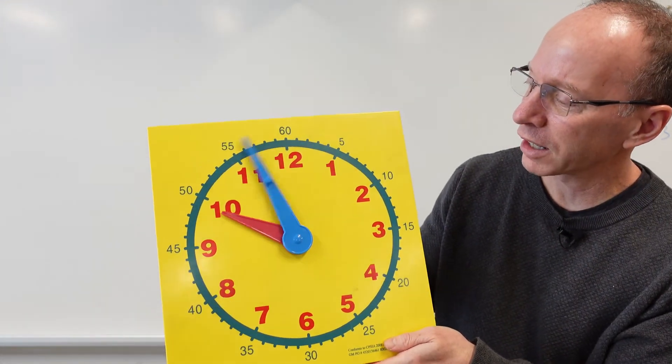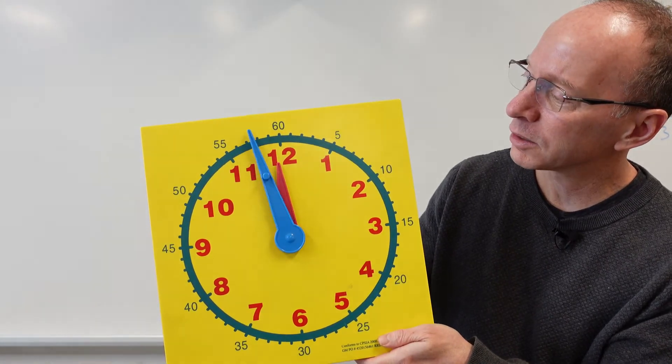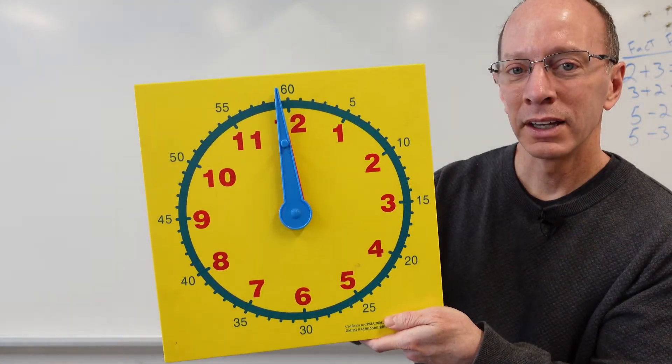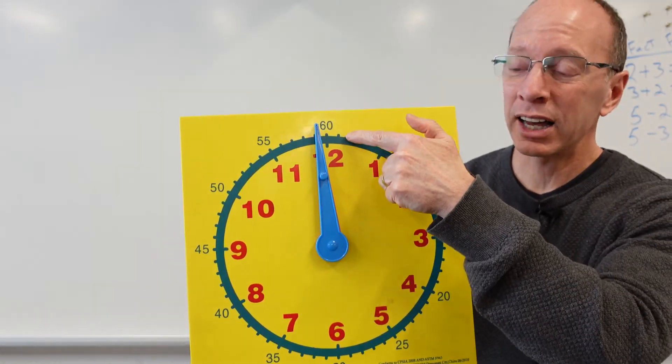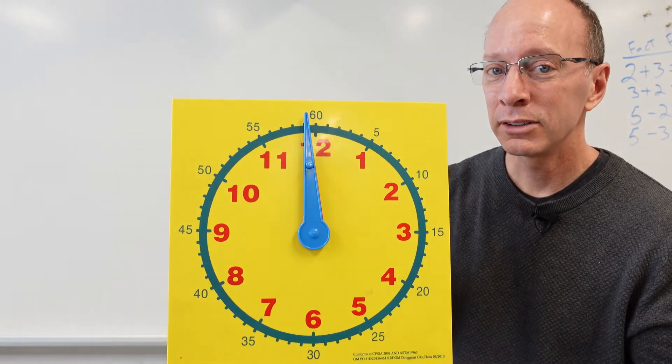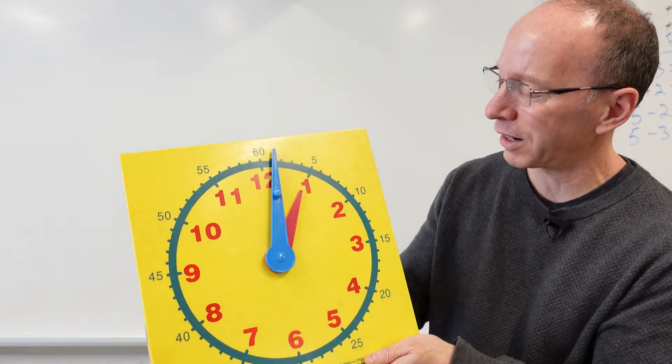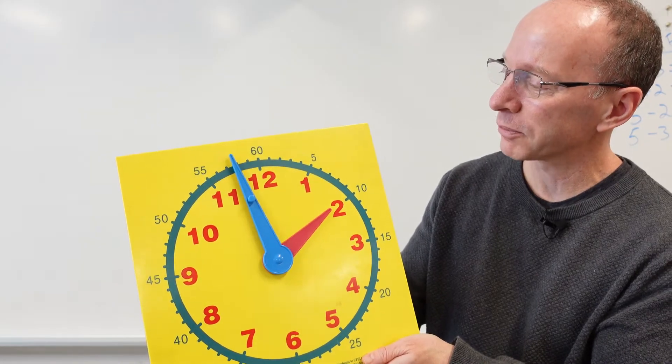I'm going to give you another challenge one. Sometimes we'll have both of the hands pointing straight up. So, now you know it's something o'clock, and the hand is pointing toward the 12, so it is 12 o'clock. Boy, you guys are doing a great job here. You are math ninjas.